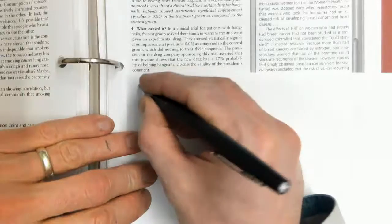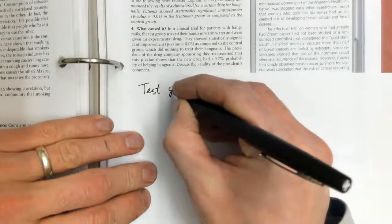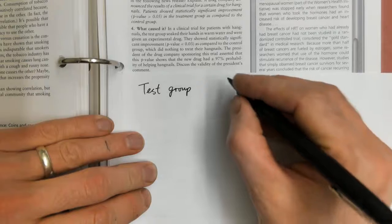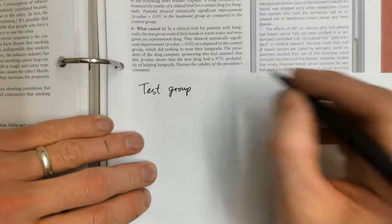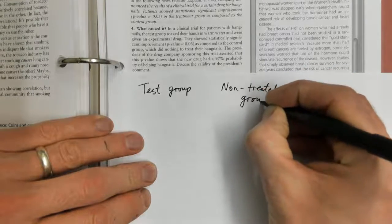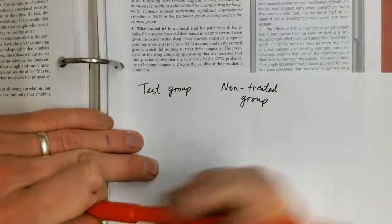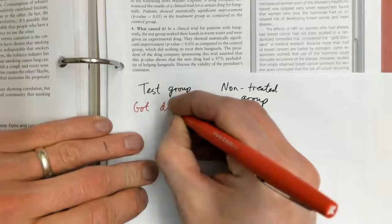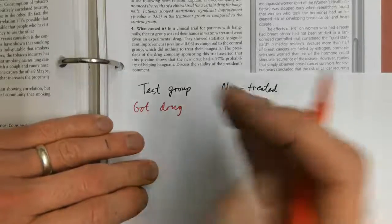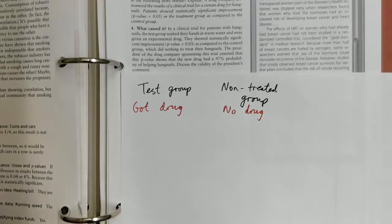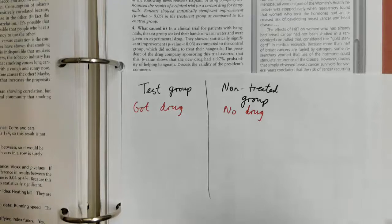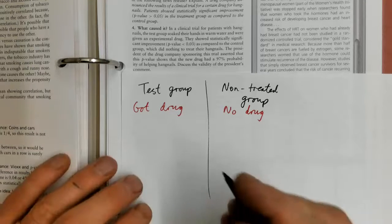You've got a test group and then a non-treated group. In the test group, these folks got the drug, and in the non-treated group, there was no drug. Both groups of people dipped their hands in the water, and then they compared how many had hangnails and how many did not.